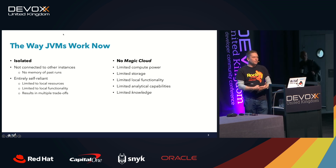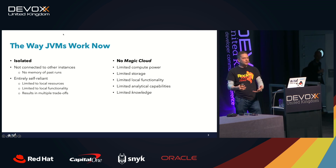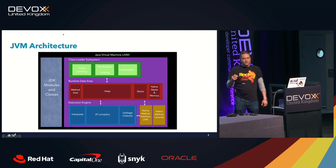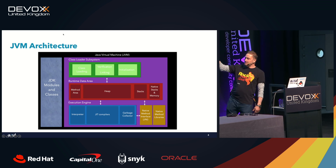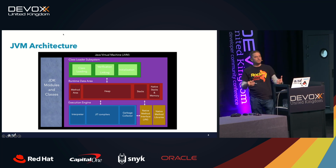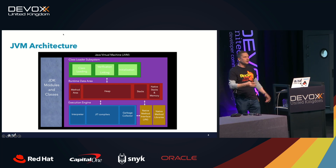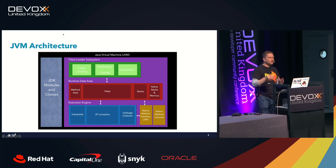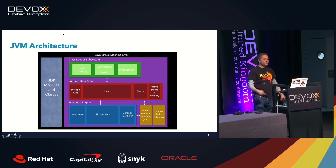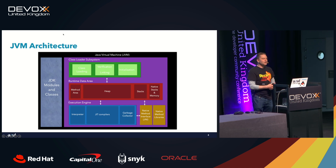The things we face are limited compute power, limited storage, limited local functionality, limited analytical capabilities, and limited knowledge — which is really the important thing. If we look at the JVM, we can see a block diagram like this. You've got your class loader subsystem which deals with loading classes. You've got your runtime data area — your heap, your method area, your stack, native stack, memory, and so on. And then you've got the things that actually do the work for the JVM: the interpreter, JIT compilers, garbage collector, all those types of things.